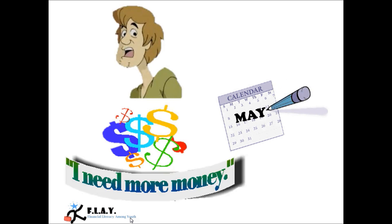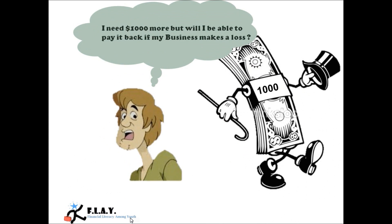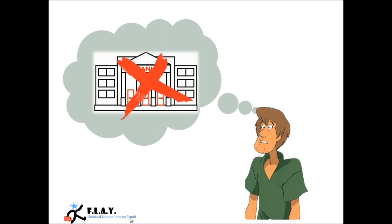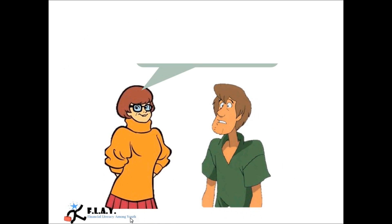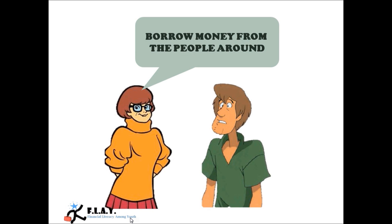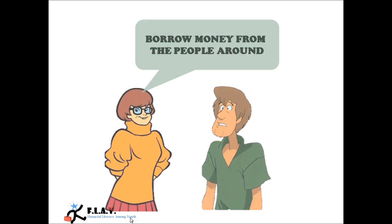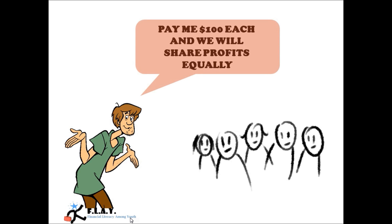His business went on quite well for a few months, but after a few months he realized that he needs more money. This time he was not sure if he will be able to pay the interest along with the money issued from the bank, because he was not sure if his business will make profit or loss. Hence, the option of the bank was no more an option. John had to again consult his friend Smurf, who guides him to borrow money from the people. John likes the idea and goes to the people to explain his business idea.